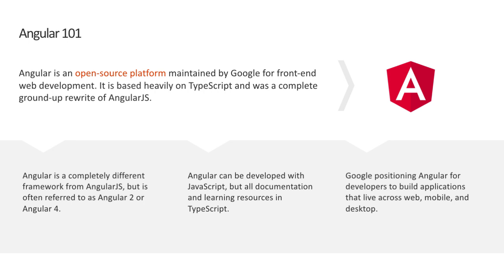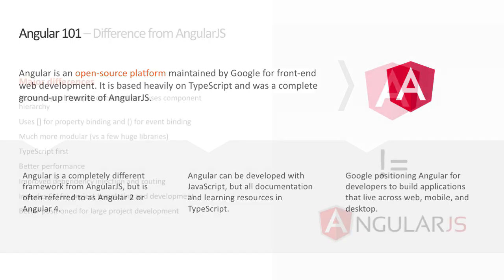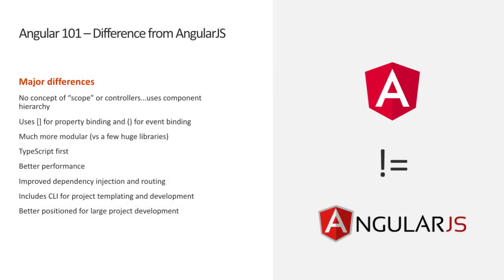Angular has a number of differences from AngularJS. One of the most notable is that Angular is based heavily on TypeScript, including the framework itself and all documentation and samples. Angular is not the same as or a derivative of AngularJS. AngularJS refers to everything that was version 1, up to but not including version 2. Angular — without the JS — refers to Angular 2 and all future versions: Angular 2.0, Angular 4.0, and upcoming releases like Angular 5.